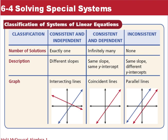This is a summary of what we're looking at as far as classifying our systems. If we have consistent and independent, that means there's exactly one solution, meaning different slopes and they intersect just at one point. When we're talking about consistent and dependent, that has infinitely many solutions, meaning they're the same lines, coincident lines, same slope, same y-intercept. If you graph it, the lines would be on top of each other. And then our inconsistent classifications, meaning there is no solutions. Same slope, different y-intercepts, parallel lines. They will never intersect. So those are the ways we can classify systems of linear equations.